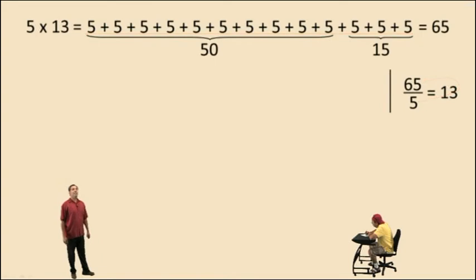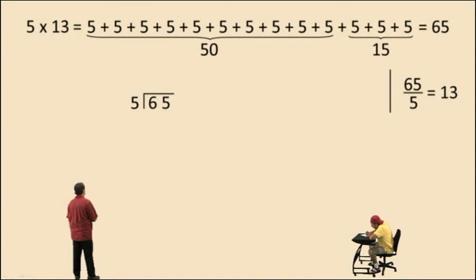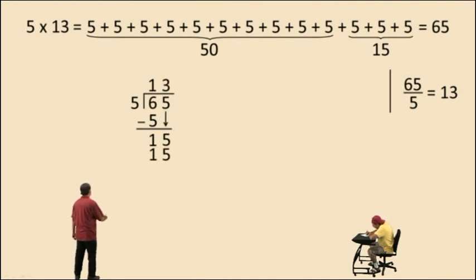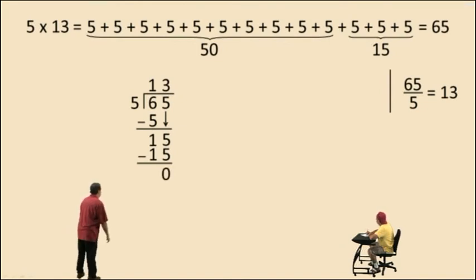Let's do it using the long division symbol. 5 goes into 65. Well, 5 goes into 6 one time. 1 times 5 is 5, subtract. Bring down your 5. 5 goes into 15 three times. 3 times 5 is 15, remainder 0. So we write our answer as 13. 65 divided by 5 is 13.